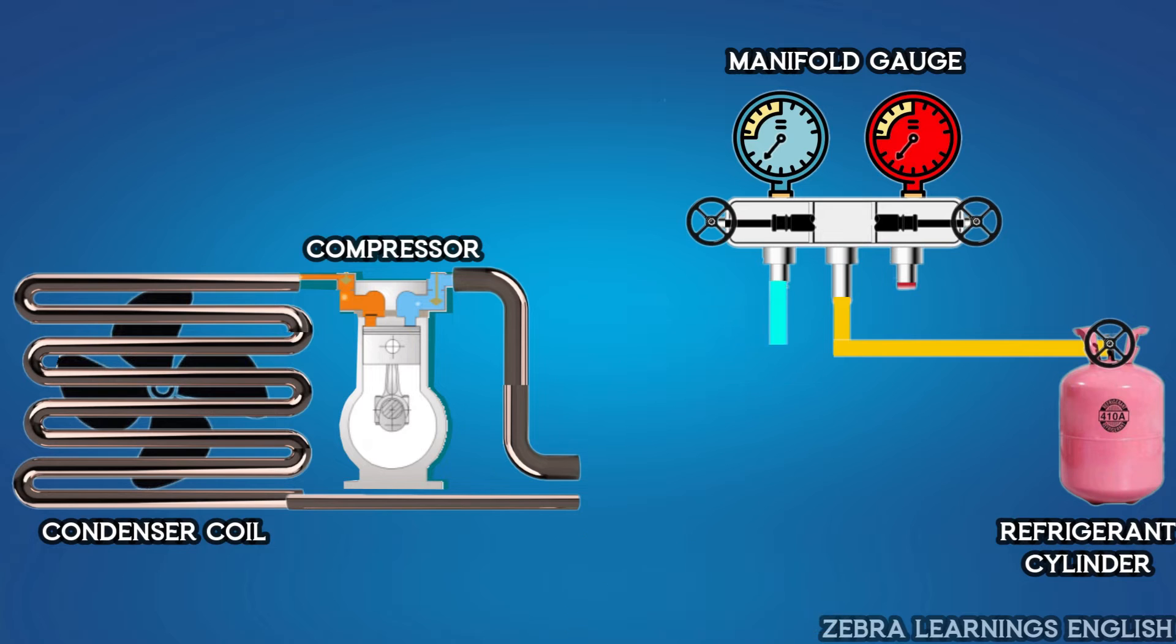After connecting the low-pressure hose to the suction line, connect the high-pressure hose to the discharge line.